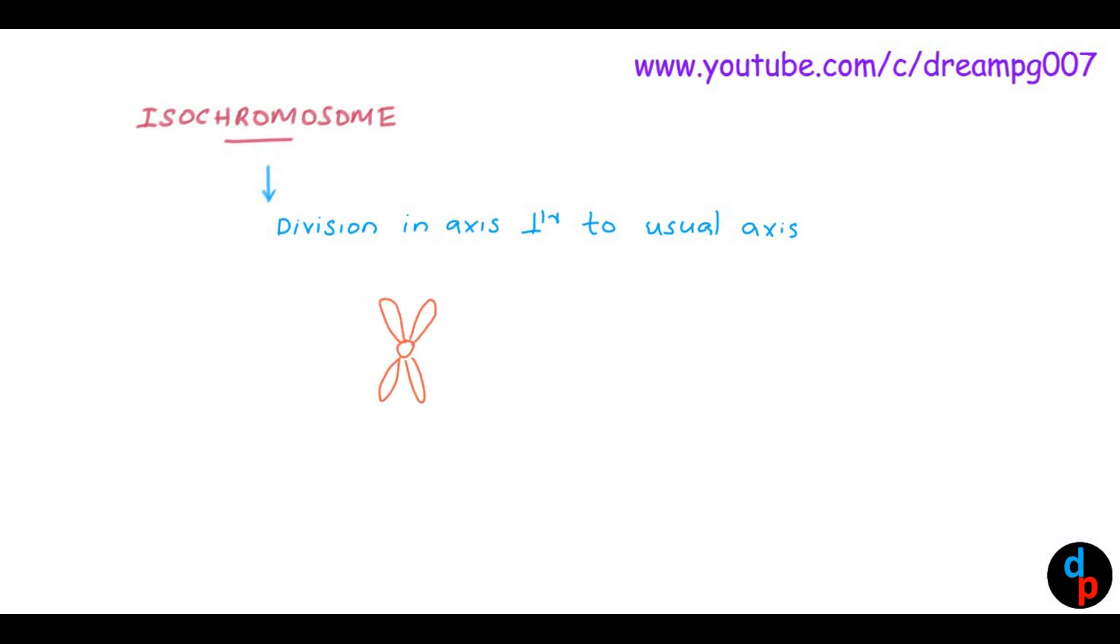Here you can see the usual axis of division and the axis of division for isochromosome formation. This is how isochromosome is formed.